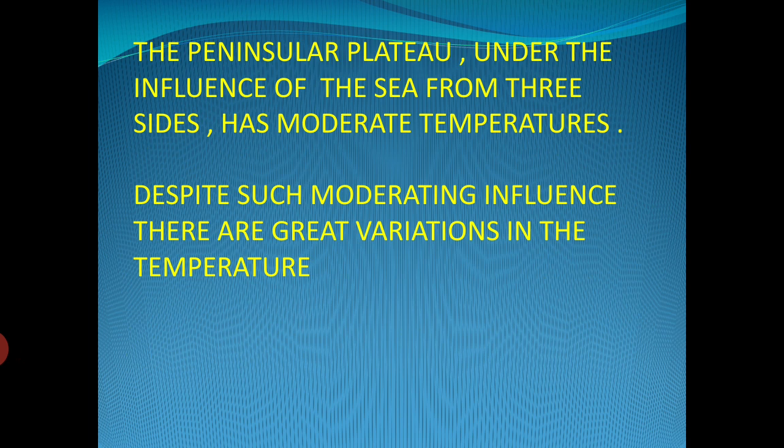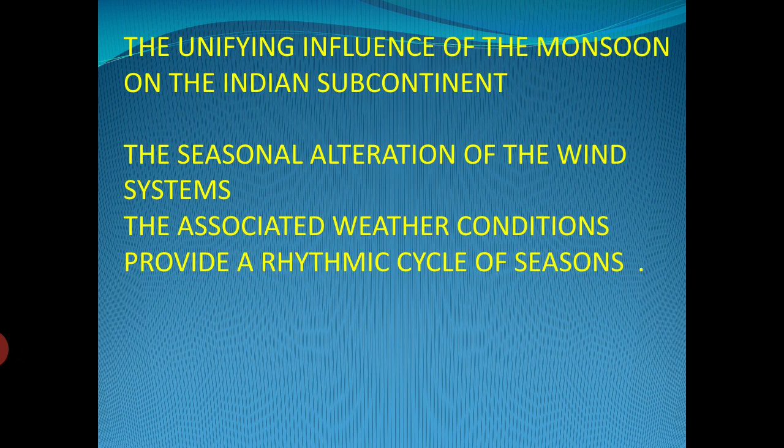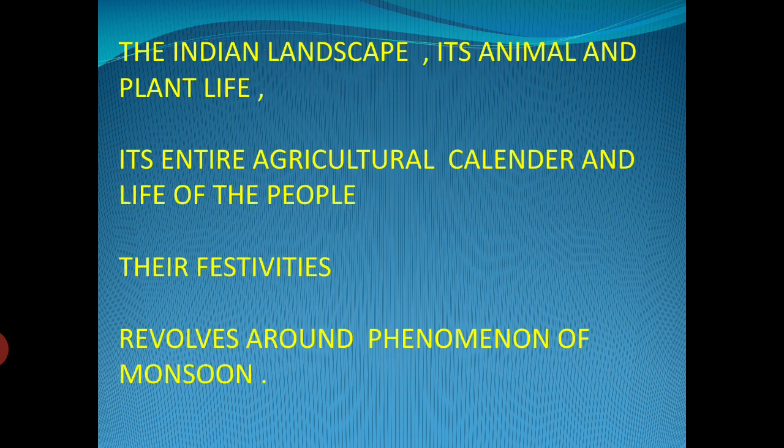Despite such moderating influence, there are great variations in the temperature. The unifying influence of the monsoon on the Indian subcontinent — the seasonal alteration of the wind systems and the associated weather conditions — provide a rhythmic cycle of seasons. The Indian landscape, its animals and plant life, its entire agricultural calendar and life of the people, their festivities, revolves around the phenomena of monsoon.